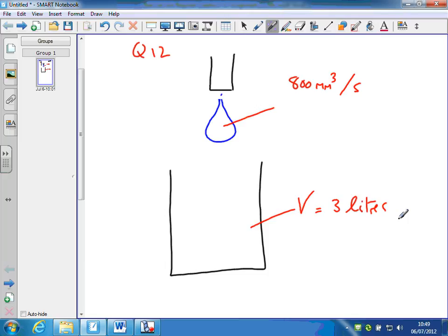So the basic idea is to get the units consistent, and then we want to know how many lots of 800 cubic millimeters go into three liters. And that will give us a number of seconds, which we can then convert to minutes and hopefully confirm the answer in the text.